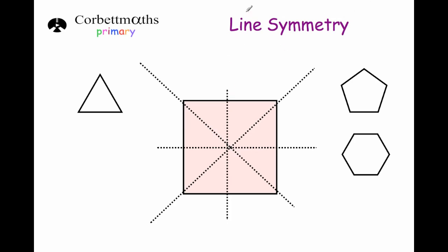A square has got four lines of symmetry — one vertically, so the left hand side folds over on top of the right hand side; one horizontally, so the top folds down on top of the bottom; and also the two diagonals. If you get a square and fold it over diagonally, the opposite corners will land on top of themselves. An equilateral triangle has got three lines of symmetry. A regular pentagon has got five lines of symmetry. A regular hexagon has got six lines of symmetry. So if a shape is regular — meaning all the angles are the same and all the sides are the same length — the number of lines of symmetry equals the number of sides that shape has got.